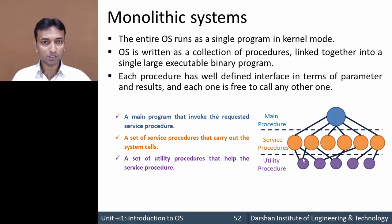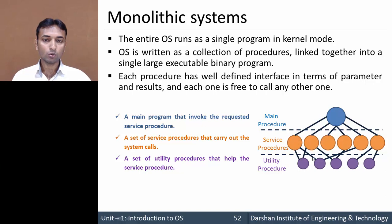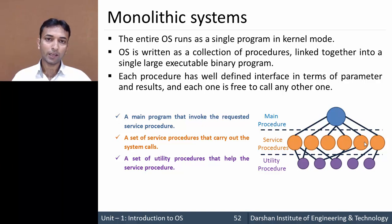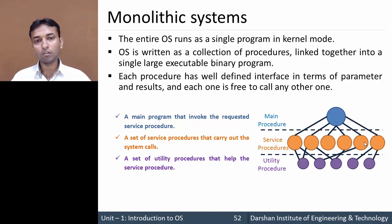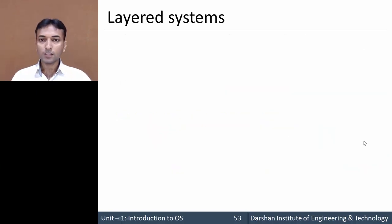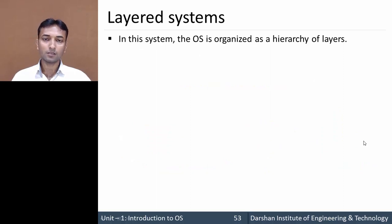A single utility procedure can help more than one service procedure, or any one service procedure can take help from more than one utility procedure. For example, a service procedure may take help from two utility procedures, and a utility procedure can help two different service procedures. So the relationship is many-to-many between service procedures and utility procedures.